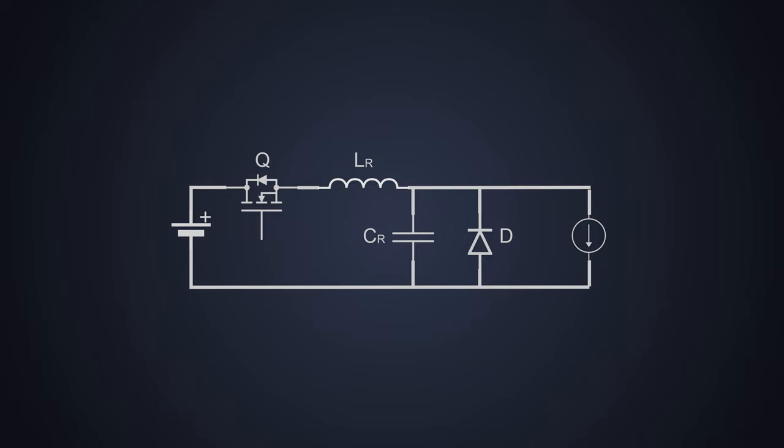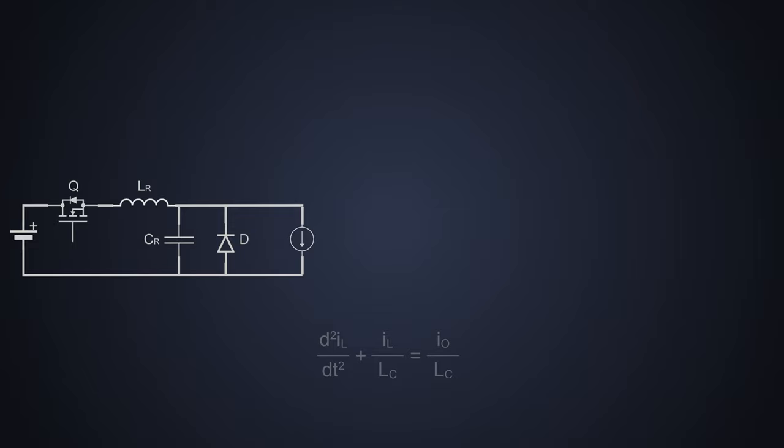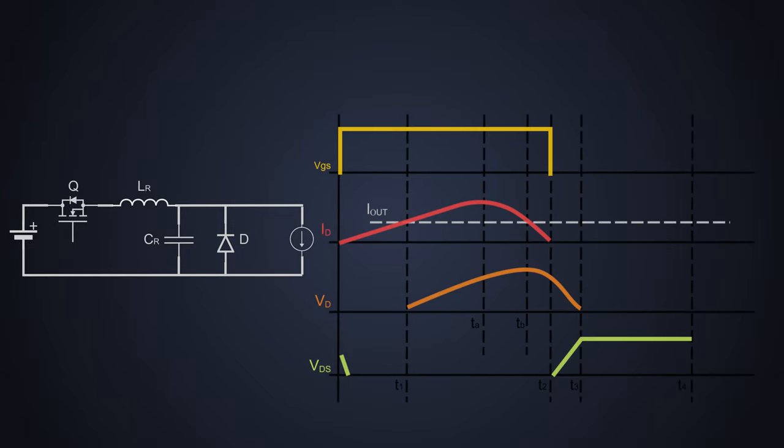To understand the working of a zero current switching resonant buck converter, we need to divide its operation into four different modes. We will ignore all the boring math part of differentiations and integration, and we will focus on the actual circuit working as well as its voltage and current graph for easy understanding.